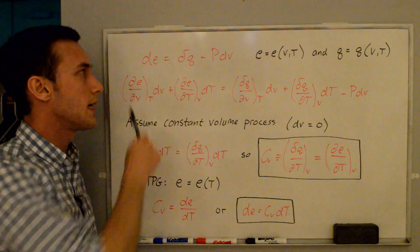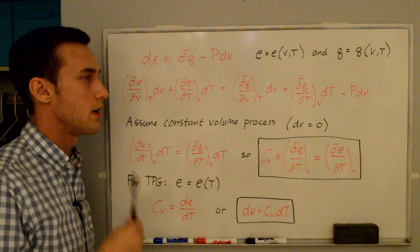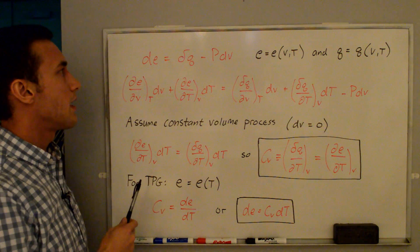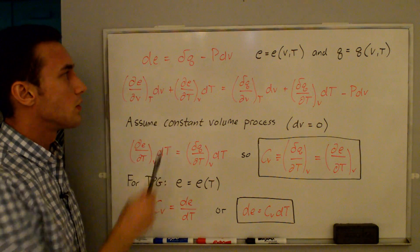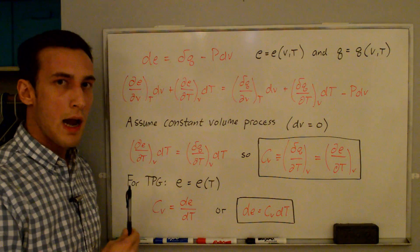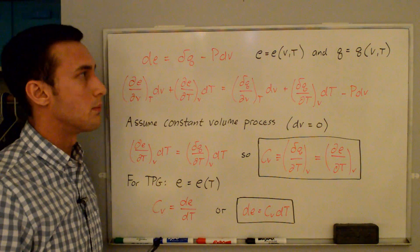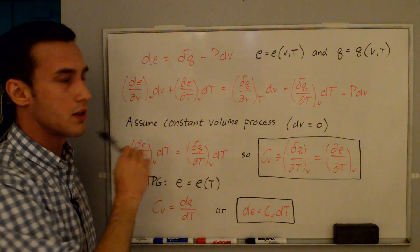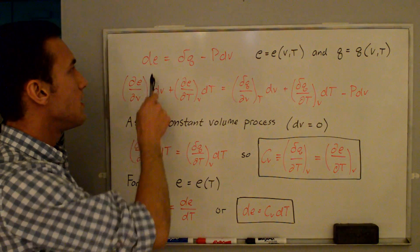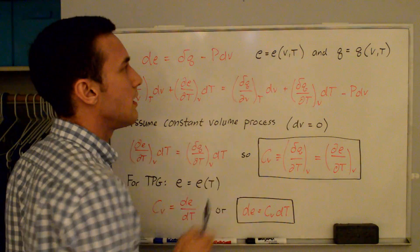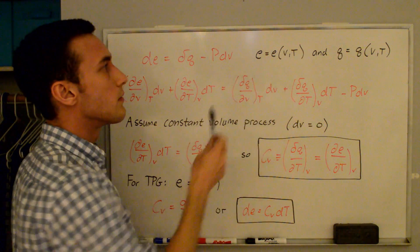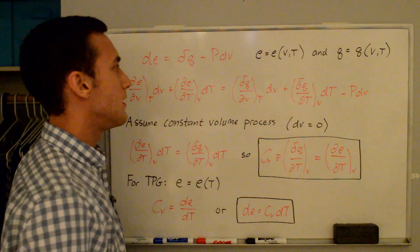I'm going to start with an expression for the first law of thermodynamics shown here. I have a video describing how to get to this equation and I'll link to that in the video description. The expression says that the change in energy of a system equals the heat added to the system plus the work done on the system, or minus the work done by the system. We're going to say that the energy and heat can be described as a function of two state variables, v and T.